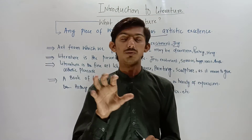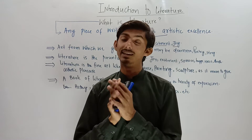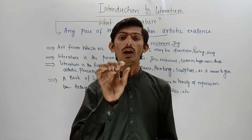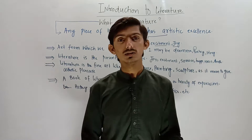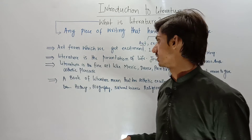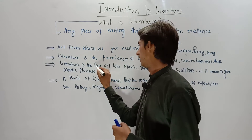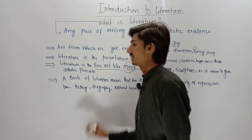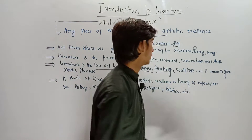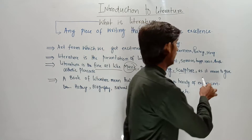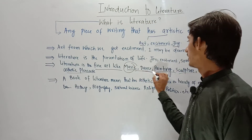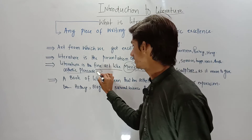Now, what is the definition of literature? Simply, anything written — any piece of writing in a book — is literature. Literature is also a fine art. Like music, dance, painting, and sculpture — these are all related to literature because they give us aesthetic pleasure.